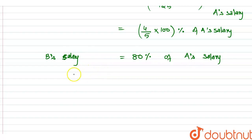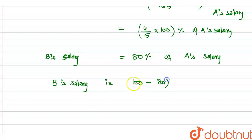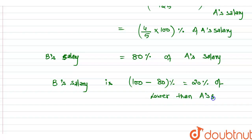So B's salary is 80% of A's salary, meaning B's salary is 100 minus 80 = 20% lower than A's salary. This is our final answer: B's salary is 20% lower than A's salary. Thank you.